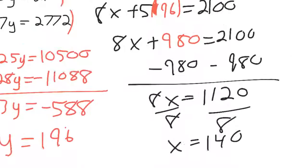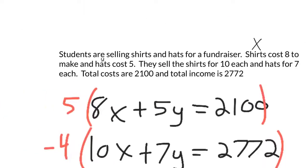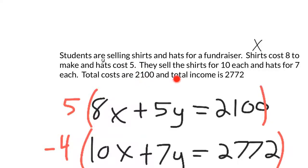That's it, 140 shirts and then 196 hats. That meets both those conditions. Their costs add up to $2,100 and their income is $2,772.